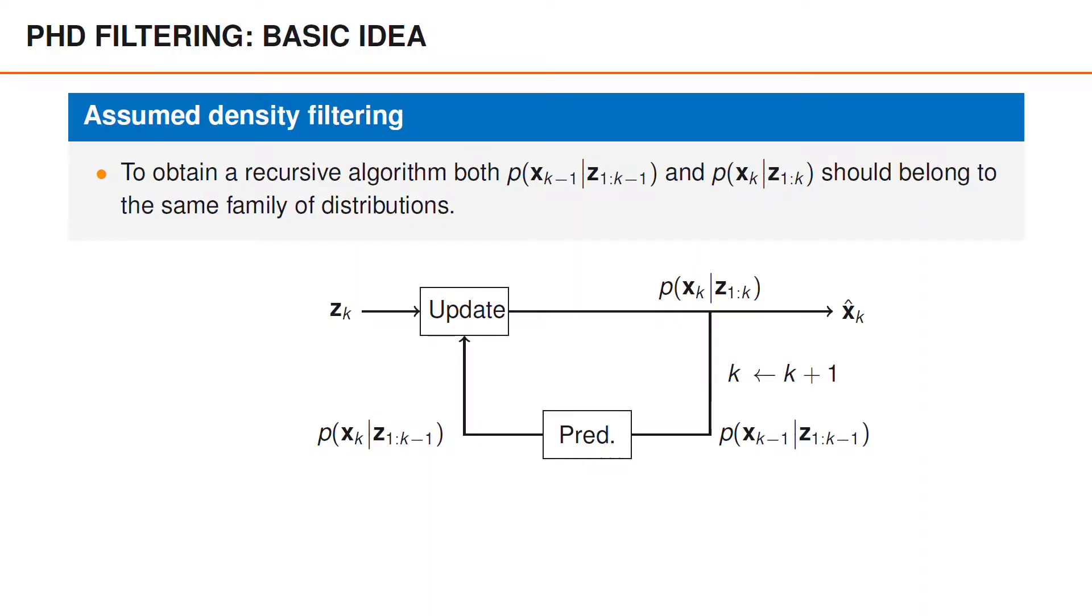Like all the algorithms that we consider, the PHD filter is based on the assumed density filtering principle. As usual, the idea is that the algorithm starts every recursion by assuming that the posterior density at time k-1 belongs to a specific family of distributions. In order to be able to start the next recursion with the same assumption, it therefore needs to make sure that the posterior distribution at time k belongs to the same family of distributions.